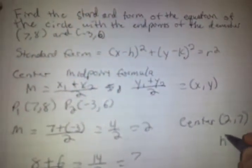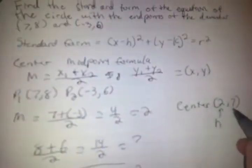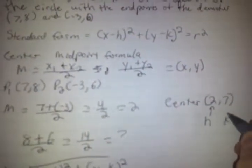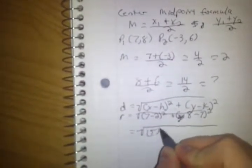Now let's plug in our values. Our x is 7, so we have 7 minus our h, which is 2, squared, plus y, our y is 8, so we have 8 minus 7, which is our k, squared. That comes out to be square root of (5)² + (1)², which equals √(25 + 1), which equals √26.